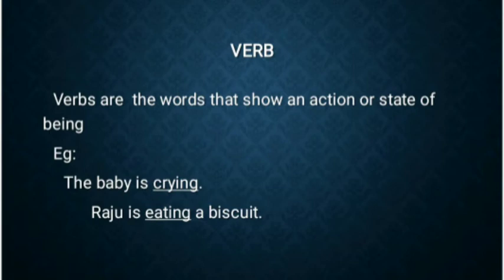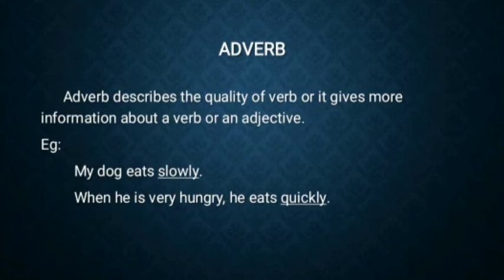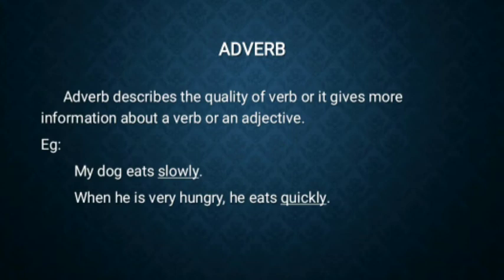Then comes the fifth type of parts of speech, that is adverb. Adverb describes the quality of a verb, or it gives more information about a verb or an adjective. For example, 'My dog eats slowly. When he is hungry, he eats quickly.' Here the word slowly tells us about how the action takes place — how the dog eats. The action is eating, and slowly gives more information about how the dog eats, so it is an adverb.